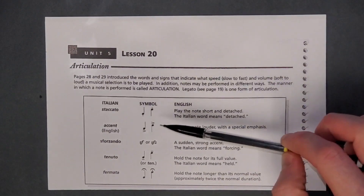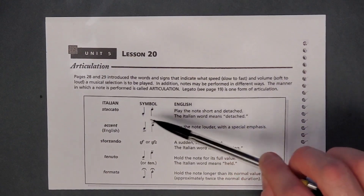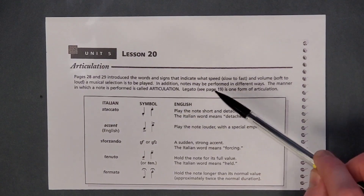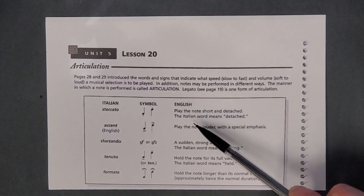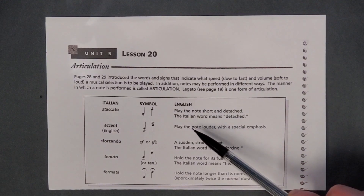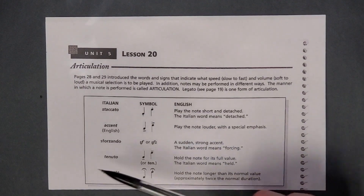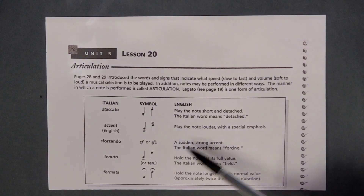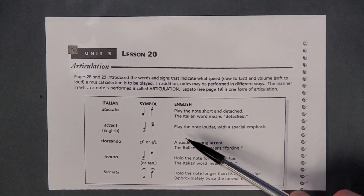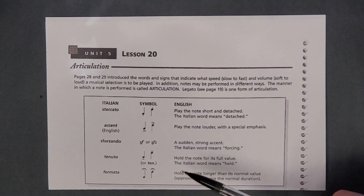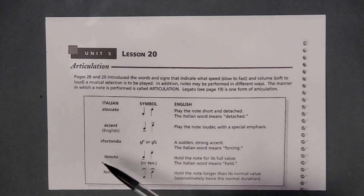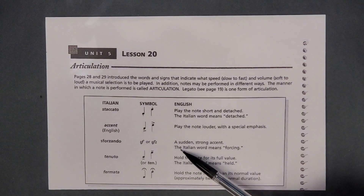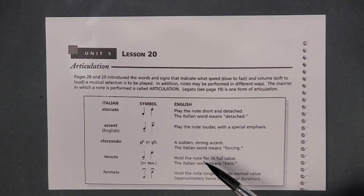Here we have the Italian word staccato. It looks like a little dot right below or above the note head. In English, that means to play the note short and detached — the Italian word means detached. And this word accent looks kind of like a little arrow or greater-than/less-than symbol — play the note louder with a special emphasis. Forzando is SF or SFZ: a sudden strong accent; the Italian word means forcing.